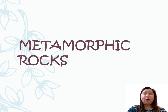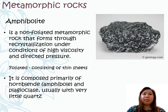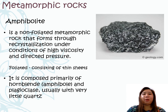Now we are moving on with the metamorphic rocks. One example of metamorphic rock is the amphibolite. It is a non-foliated metamorphic rock that forms through recrystallization under conditions of high viscosity and directed pressure. Foliated means it is consisted of thin sheets. And this kind of rock is composed primarily of hornblende and plagioclase, and usually has very little quartz.